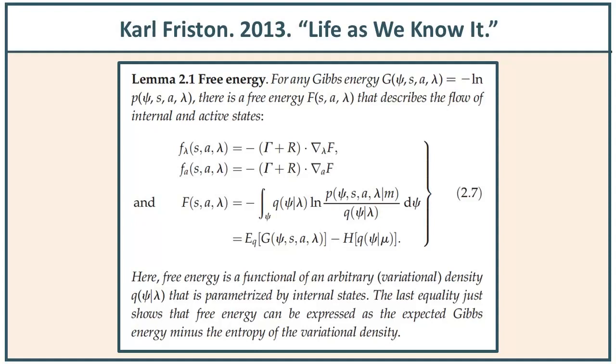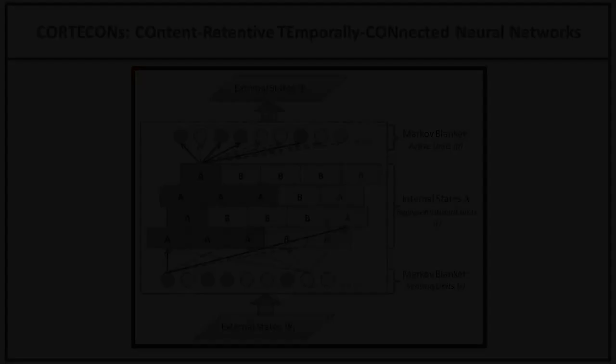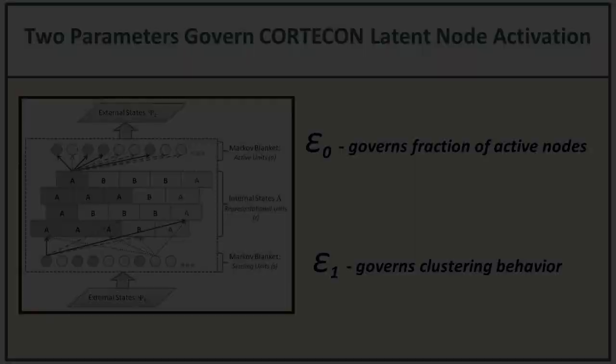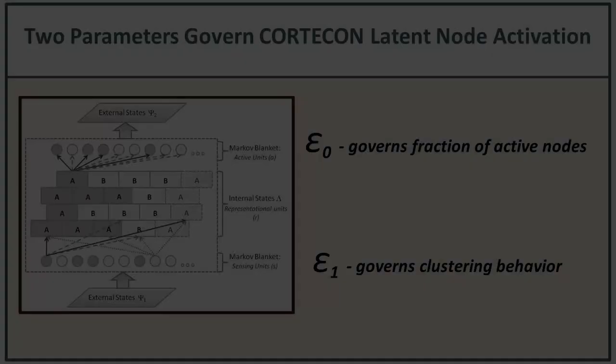To do free energy minimization, we need a free energy equation. The one that's actually most suited for this has been relatively obscure up until now — which is why we haven't seen it in action. But that's the use of the corticon. It uses a free energy equation, the cluster variation method developed by Kikuchi and then advanced by Kikuchi and Brush, which is eminently suitable for our task. Specifically, we can control the number or fraction of active nodes as well as the degree of clustering, and that will help us a lot.